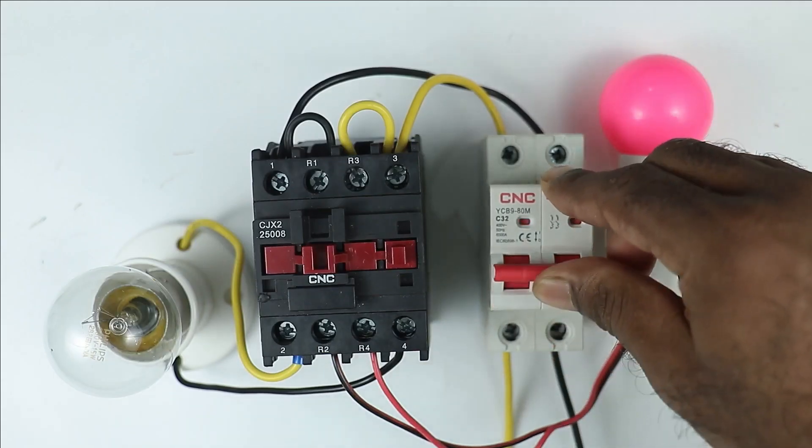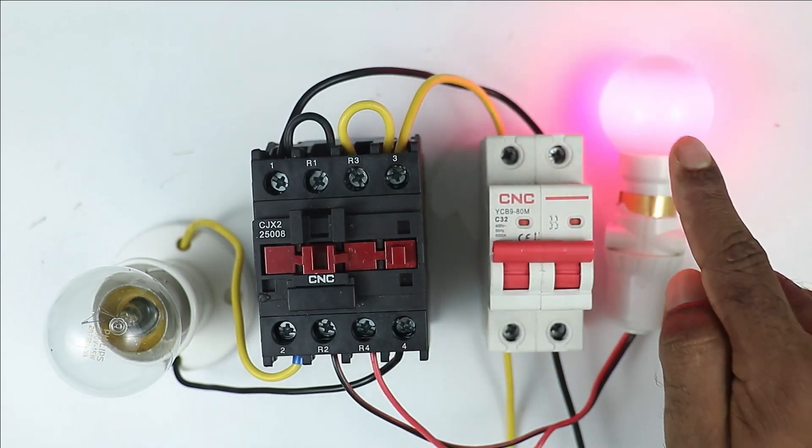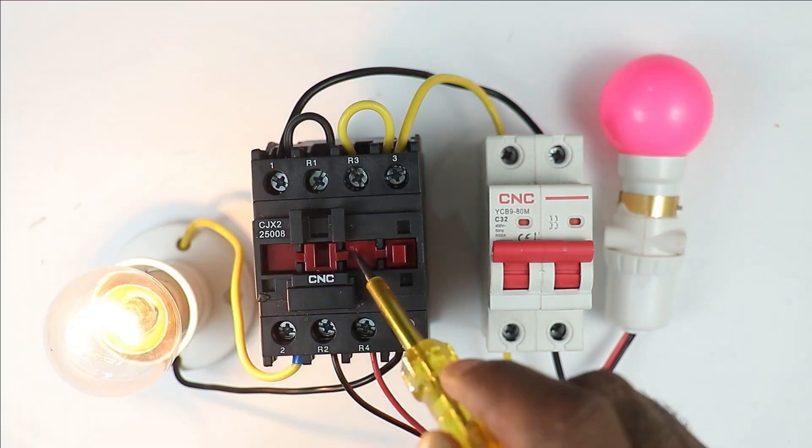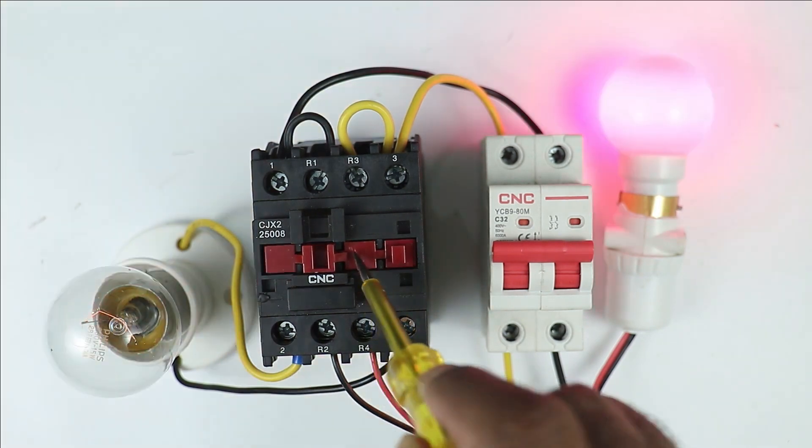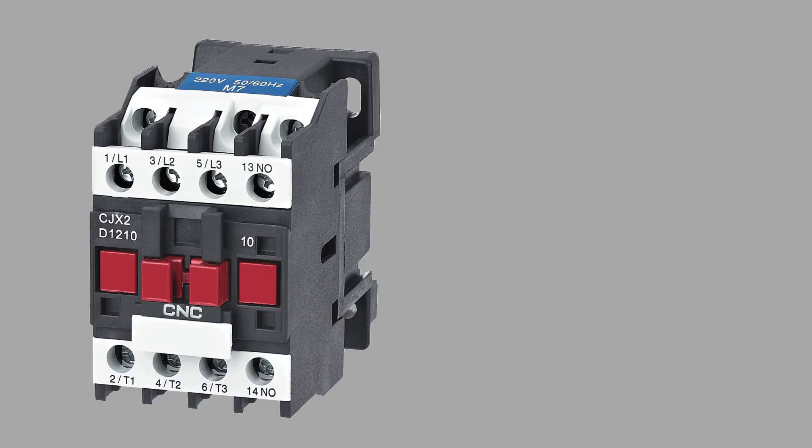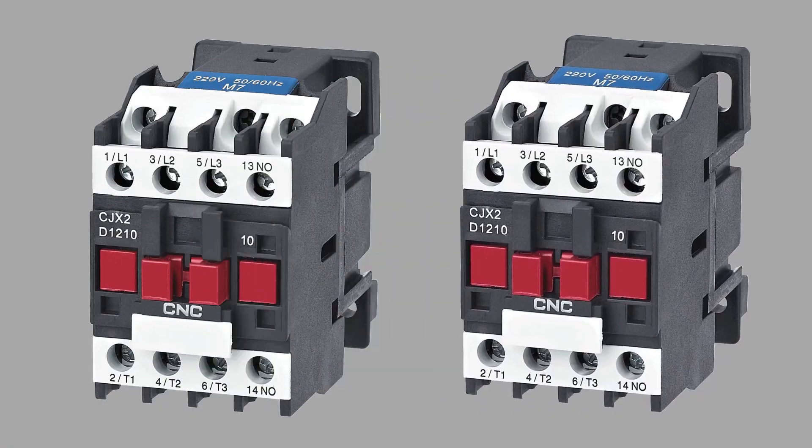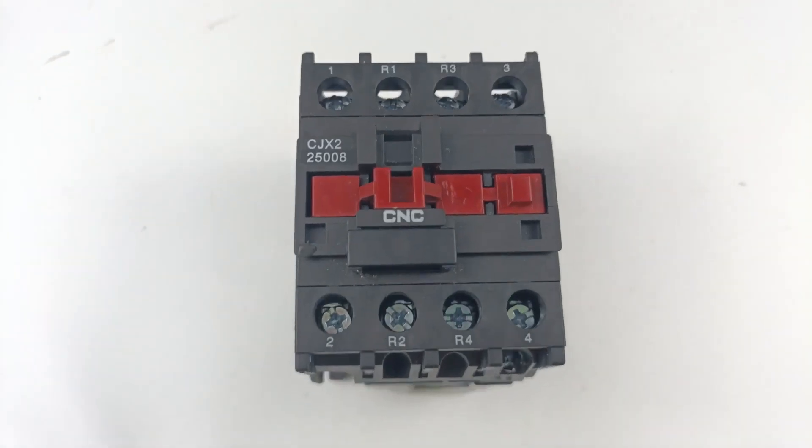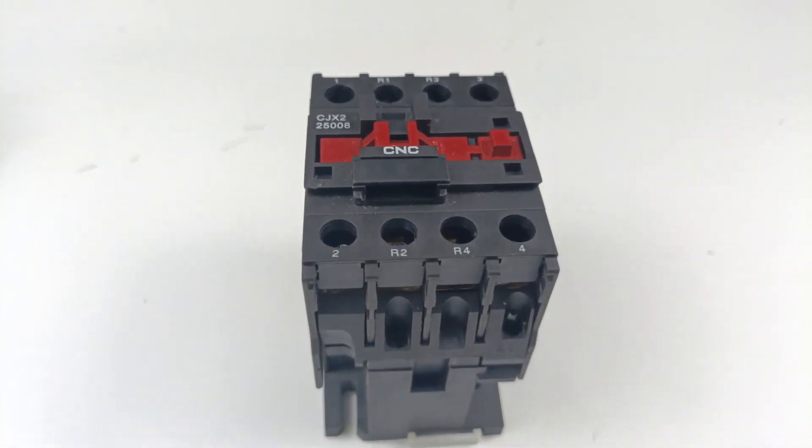So by using this contactor, to this night lamp and to this main lamp, we can easily perform the changeover. If you don't have this type of contactor, then in this condition, you have to use two different contactors. So by using this contactor, I will explain you the whole concept.